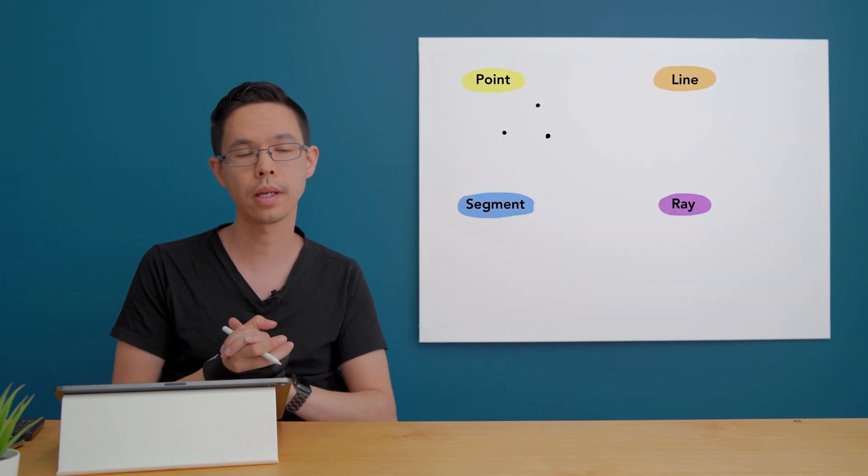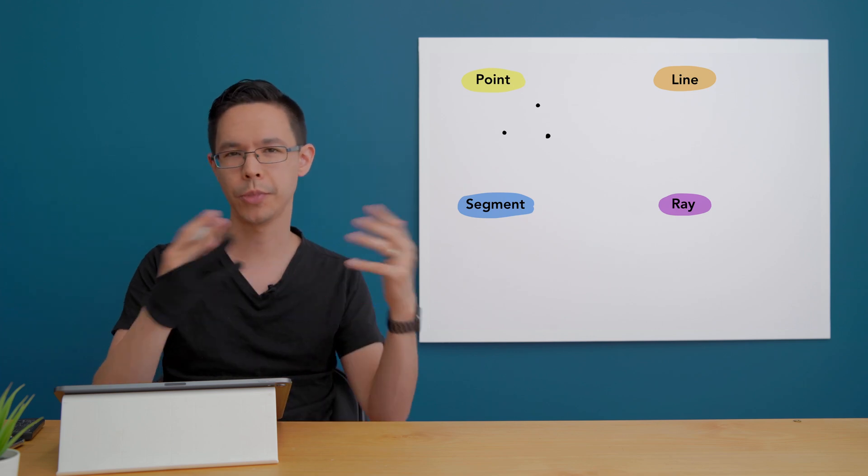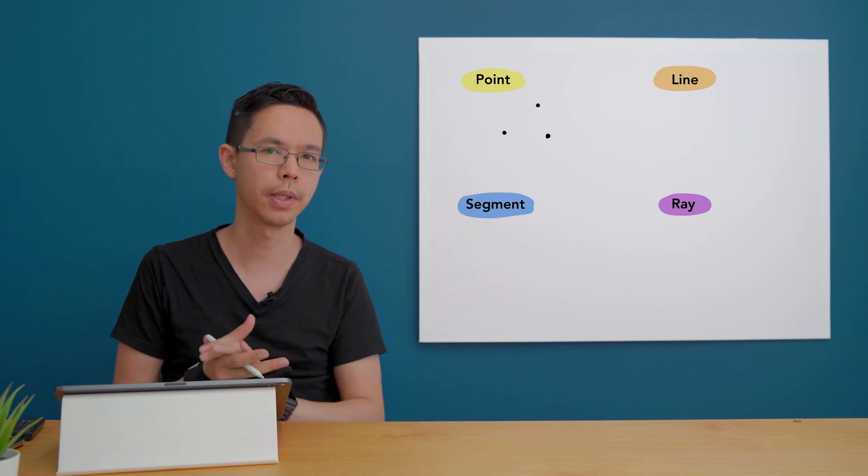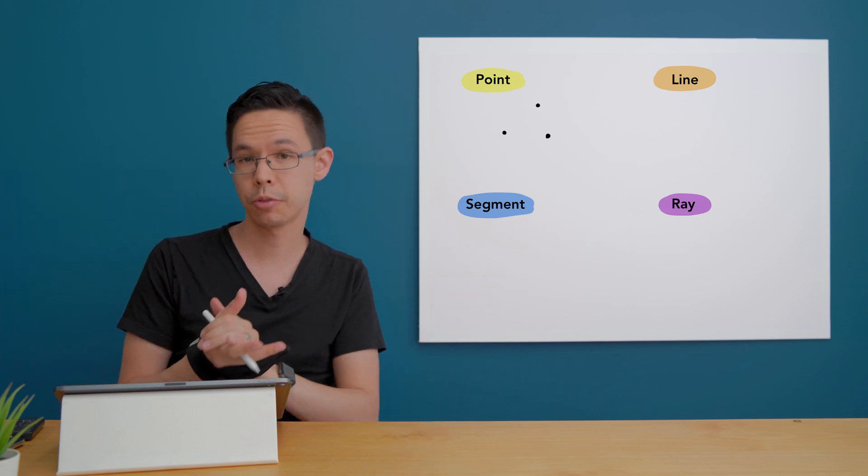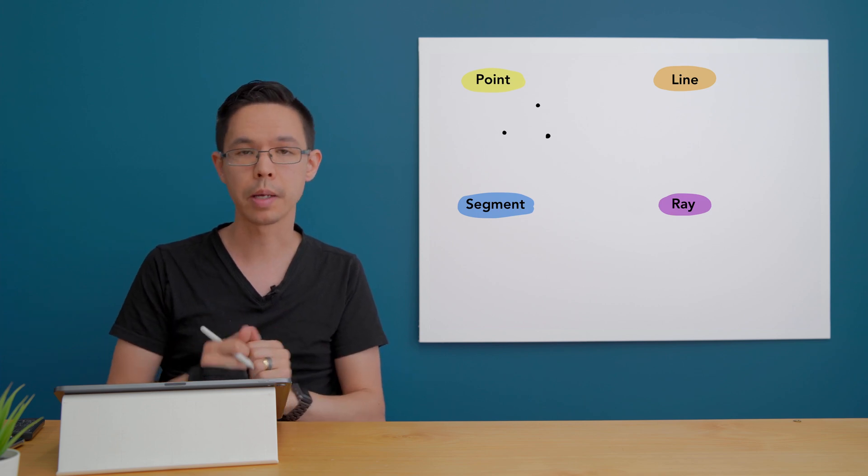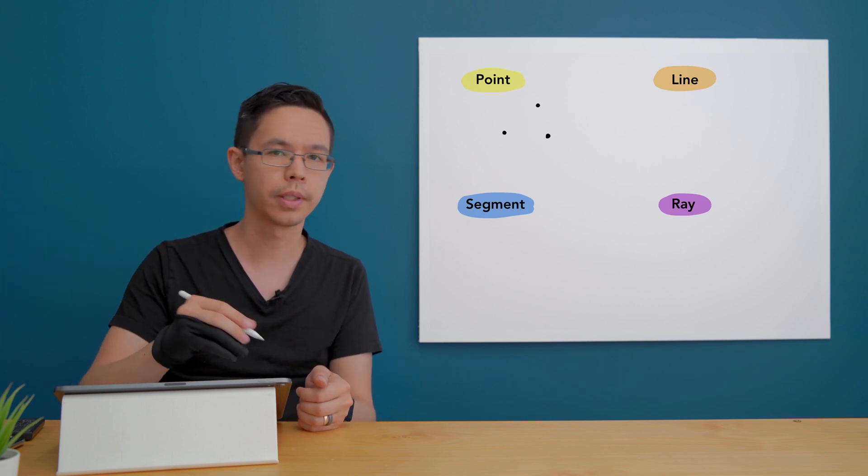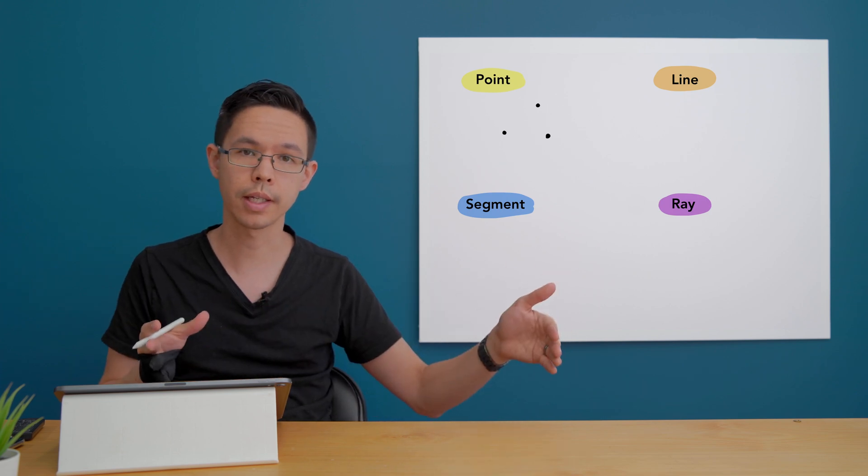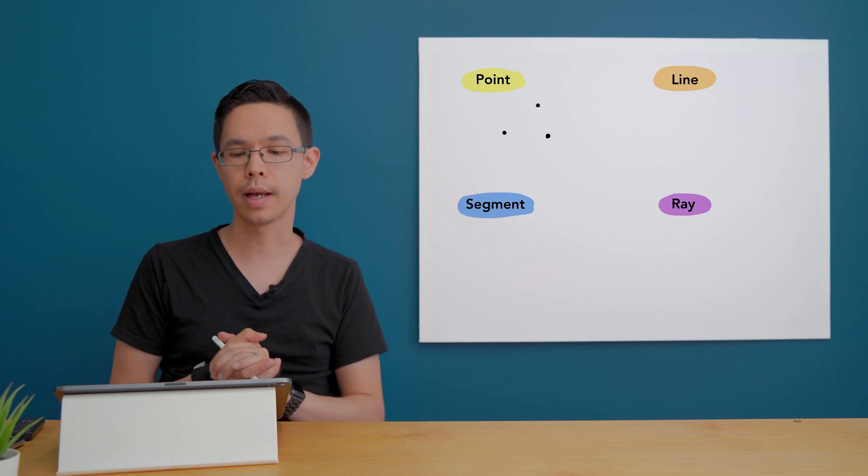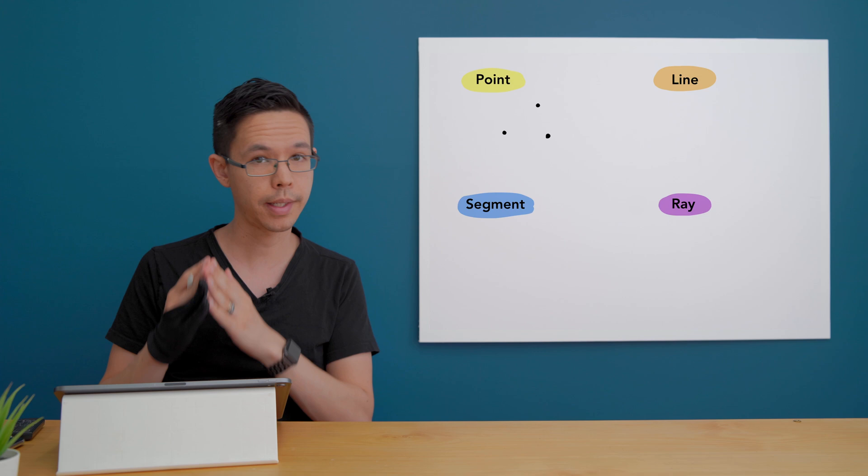Our first one is about points. Points are precise locations on a diagram, a geometry based problem, and they are shown usually as dots and we give them labels. We label them usually with the first bit of the alphabet and we always make sure that they are capital letters.